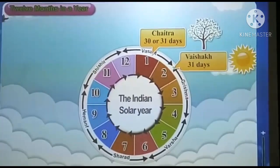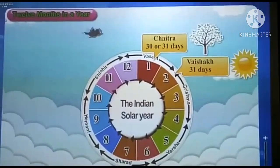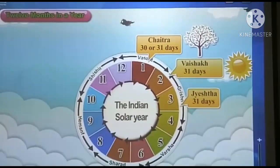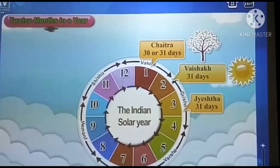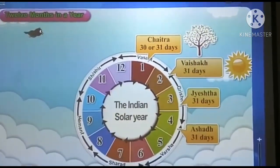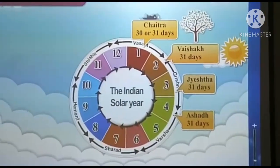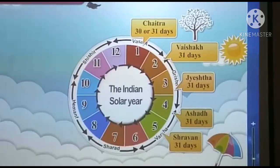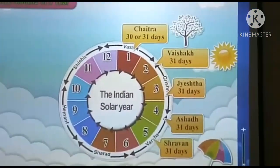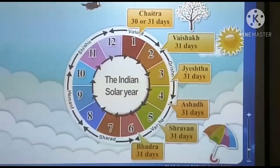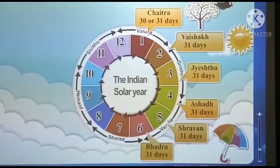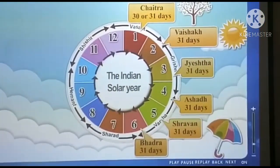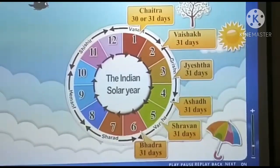Then comes Vaisakh. Vaisakh is the second month and has 31 days. Jisht is the third month and has 31 days. Then comes Ashad. Ashad is the fourth month and has 31 days. Shravan is the fifth month and has 31 days. Then comes Bhard. Bhard is the sixth month and has 31 days. If you have noticed carefully, you will see that all the above months have 31 days.